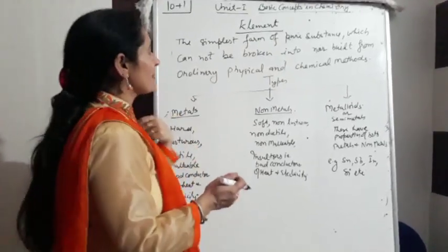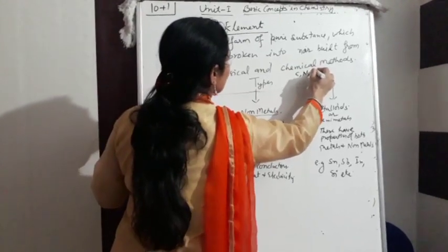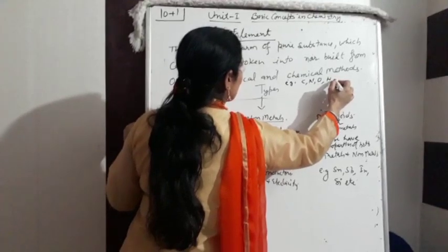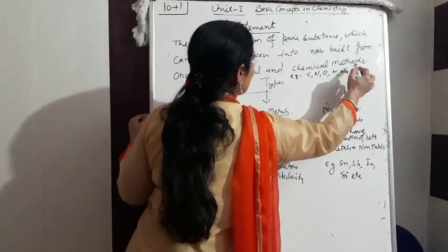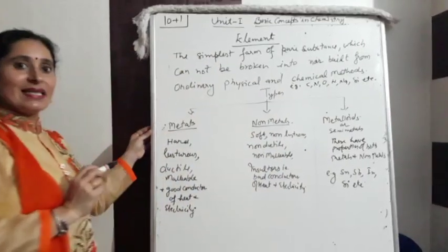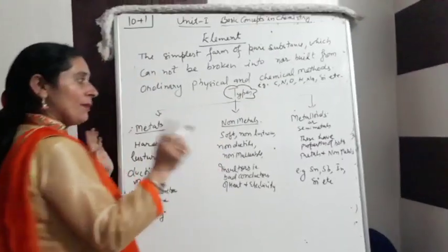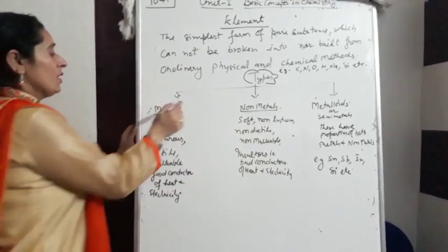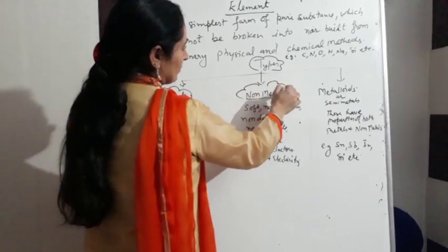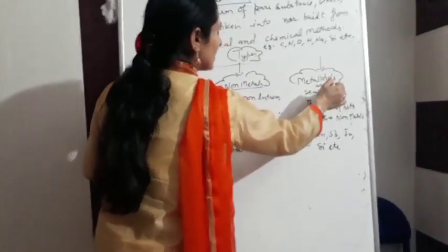As I have told you the examples, like carbon, nitrogen, for example carbon, nitrogen, oxygen, hydrogen, sodium, silicon etc. Elements are three types, you saw in classification. The whole periodic table, you divide in three parts: metals, non-metals and metalloids. In periodic table, on the left, all are metals. As you go from left to right, non-metals, and in between come metalloids.